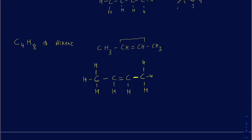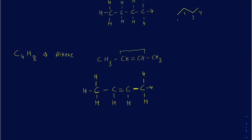To draw the skeleton structure of this alkene, you still draw four carbons in a chain — one, two, three, four — but you have to show where the double bond is, so you draw a double bond between the second and third carbons. That's how you show the double bond in the skeleton structure.